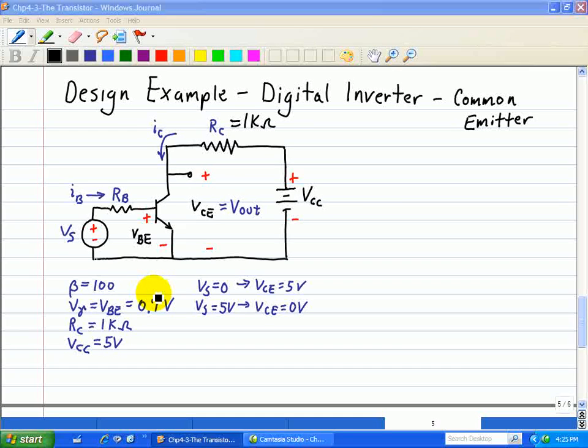Now to meet the second condition, the transistor must be in the saturated mode since the required output Vce is zero volts.